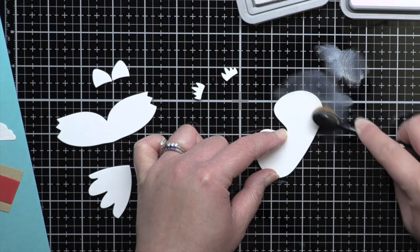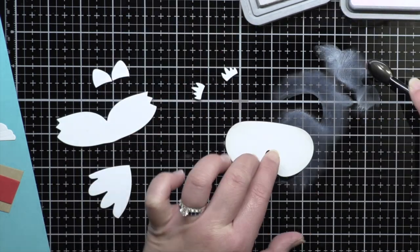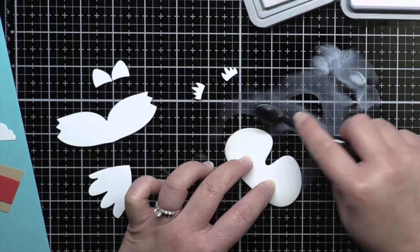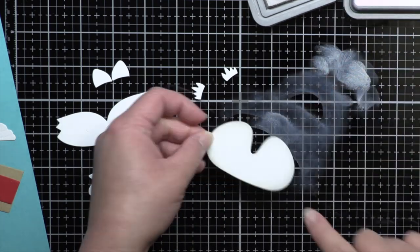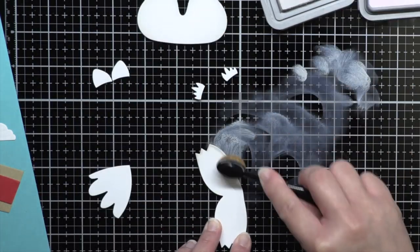Then I added a little Distress Oxide blending to my Raccoon, Fox, and Cups. I blended Pumice Stone on all the white parts of their faces and Spun Sugar on their ears with a blending brush.